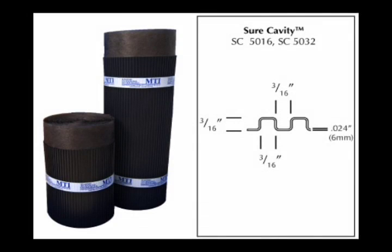For the drainage plane, we are using Sure Cavity from MTI. Sure Cavity comes in two thicknesses, 3/16th of an inch and 10 millimeter. 10 millimeter drainage planes are code in Canada. In this video, we are using the 3/16th inch Sure Cavity.